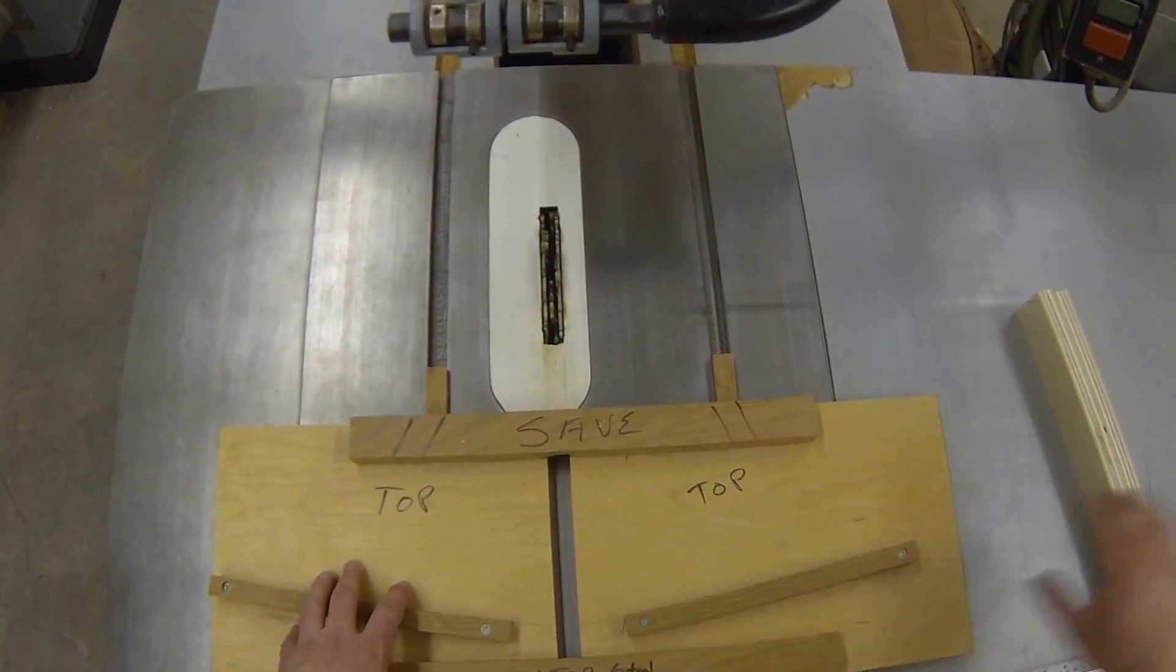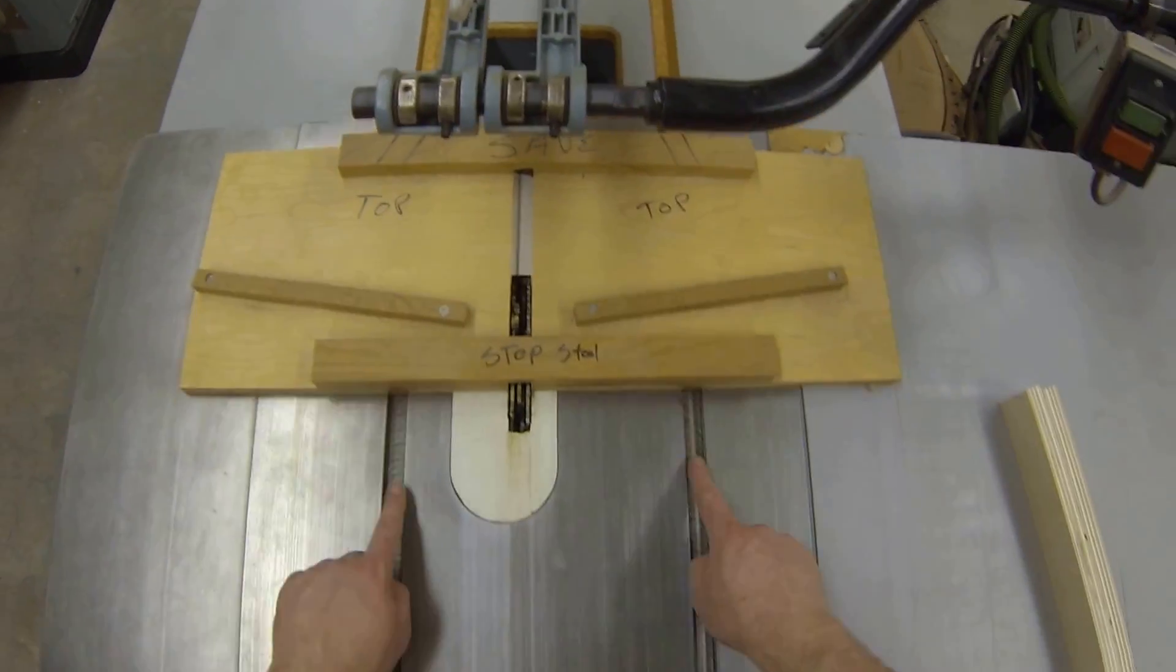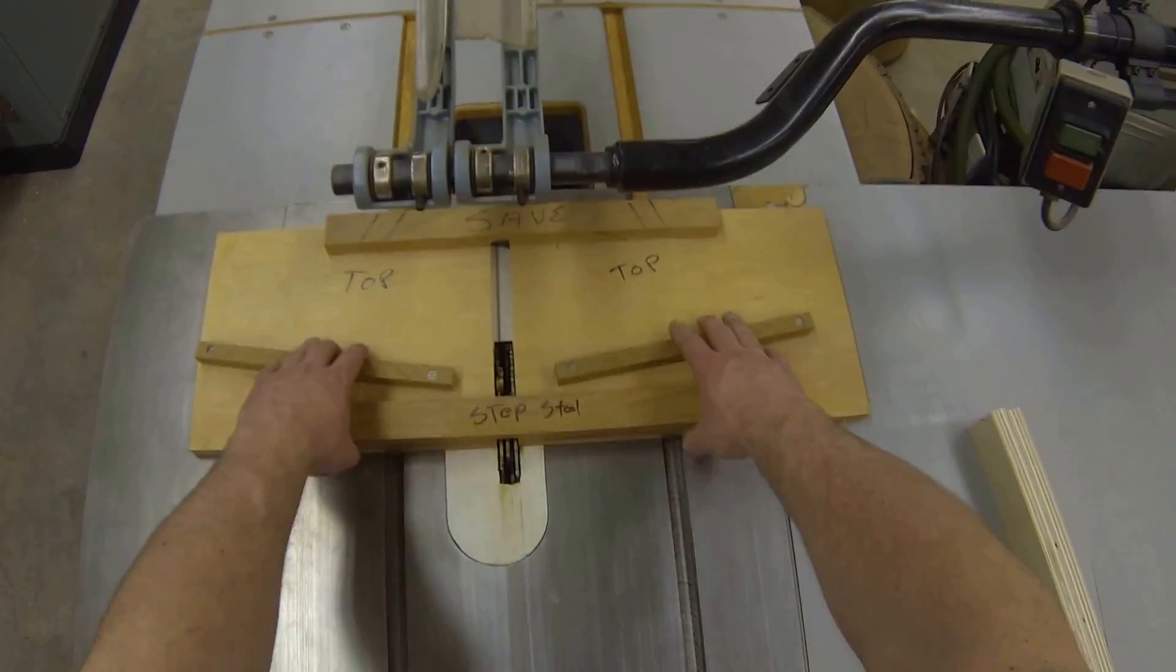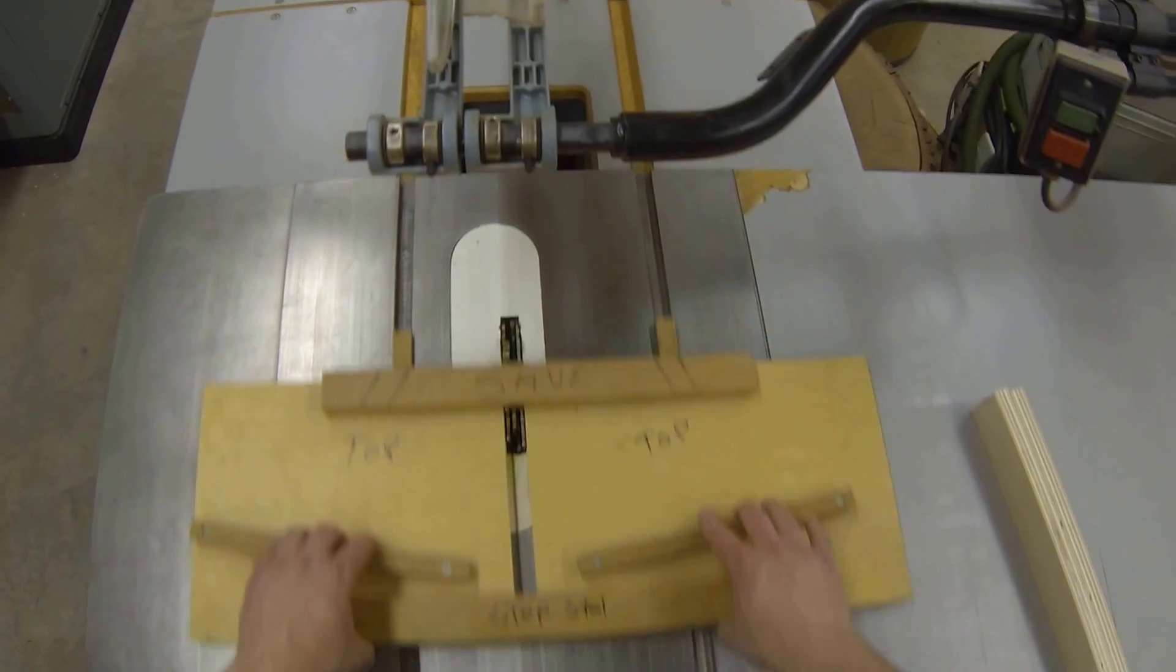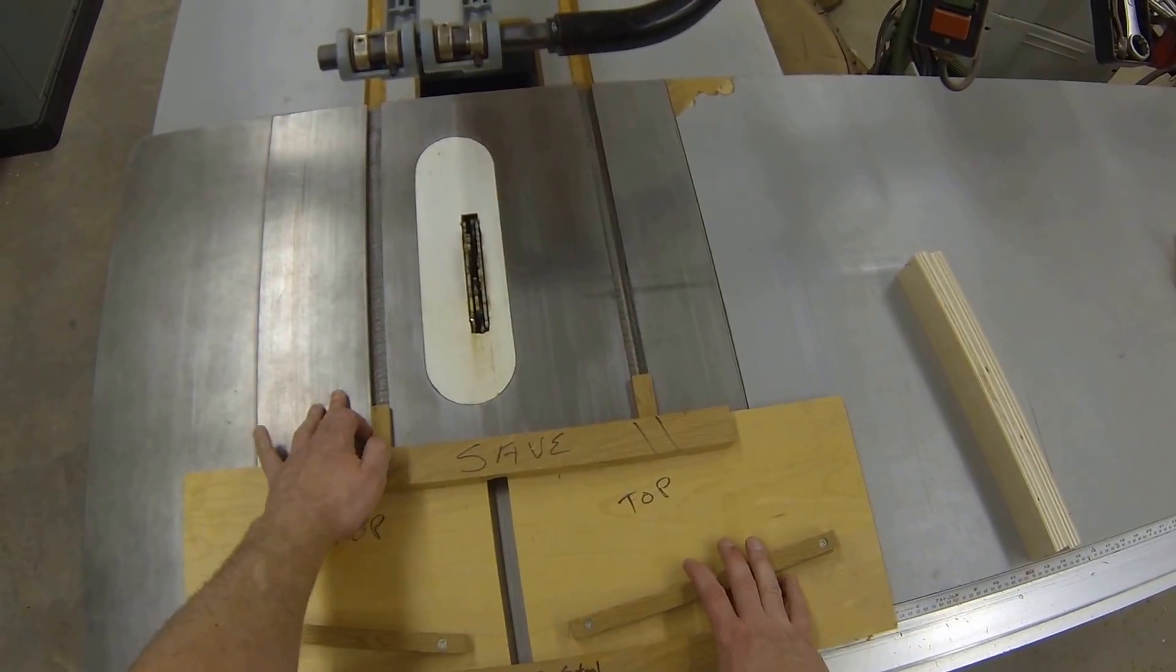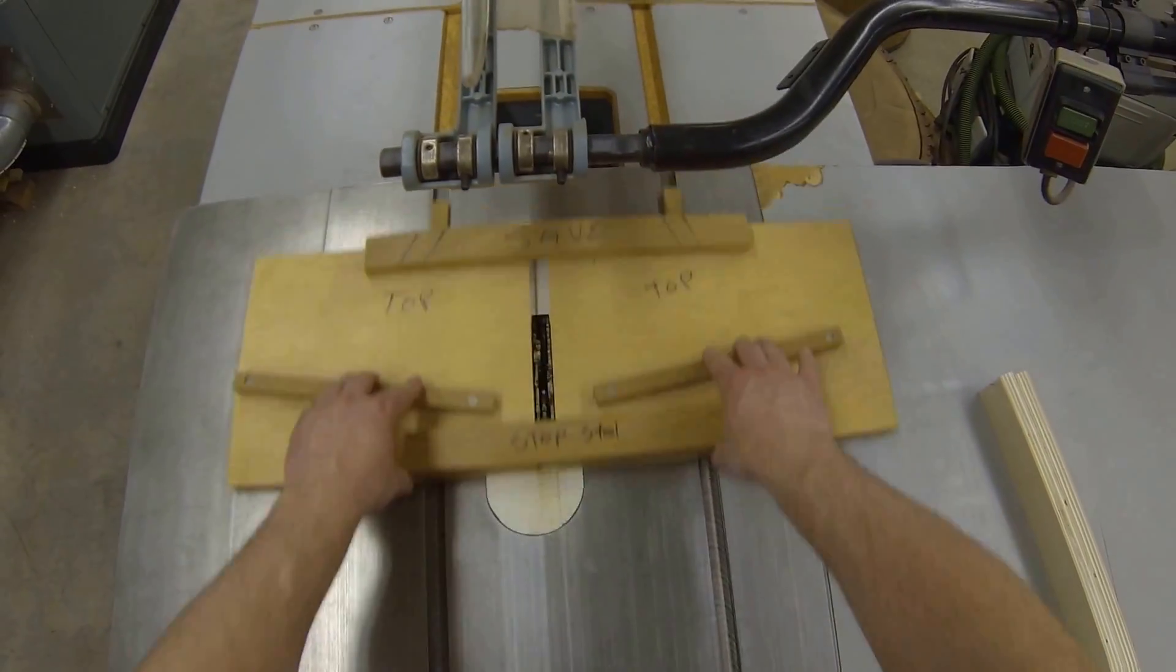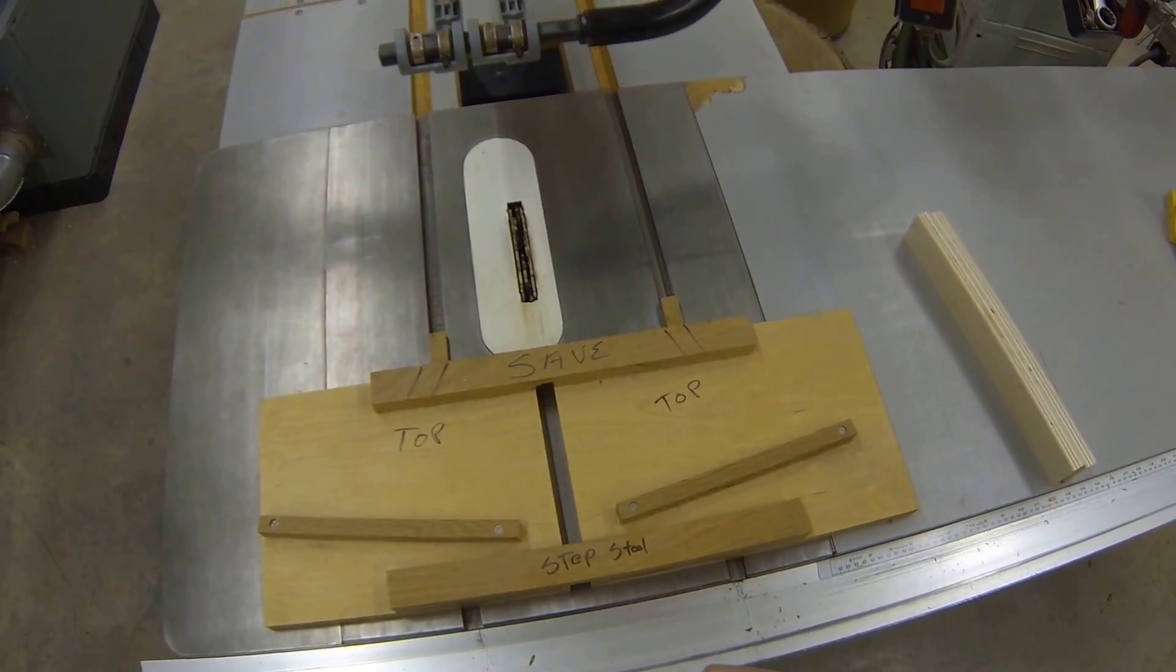You're going to need to take and remove the fence or move it all the way over, then set up the sled into the actual T-slots of the table. Make sure that this slides really well. If it doesn't slide well, wax the tabletop and wax the slides - it'll smooth out after that.